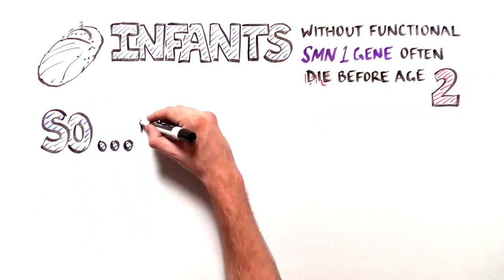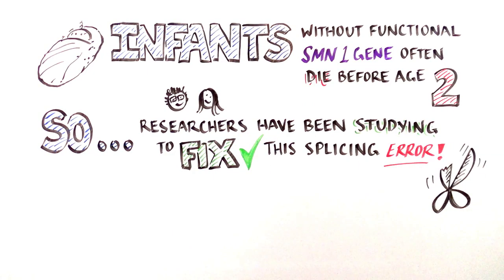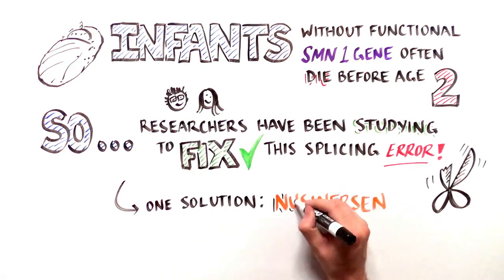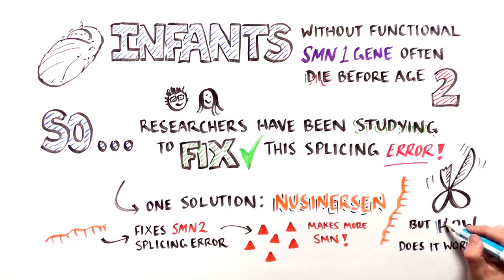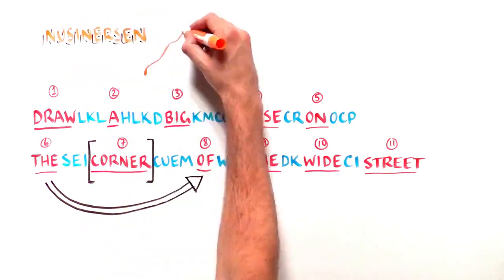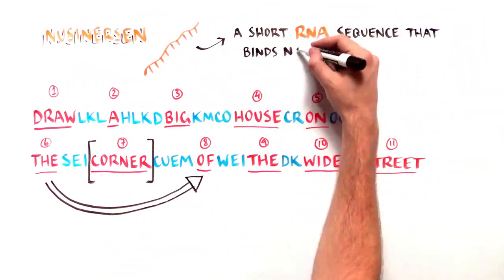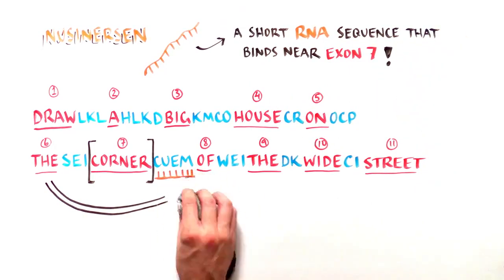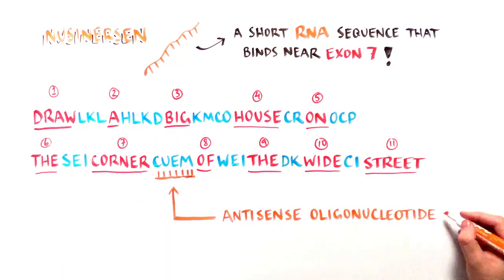One solution is called nusinersen. It enables SMA patients to make more SMN protein. Nusinersen is a short sequence of RNA that binds just after exon 7 in the unedited RNA message. This tiny piece of RNA prevents exon 7 from being skipped. It is called an antisense oligonucleotide, or ASO.